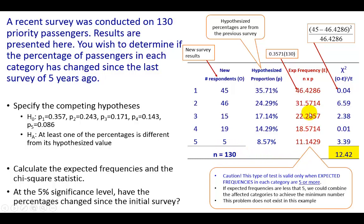Now the question is, based on these expected frequencies — which is what we should expect if nothing has changed — has anything changed? We look at the difference between the number of respondents in each category and the expected number of respondents in each category, and use that to construct the chi-square statistic. For each category, you take the observed value minus the expected value, square it, then divide that squared difference by the expected value. You calculate this chi-square value for each of the categories.